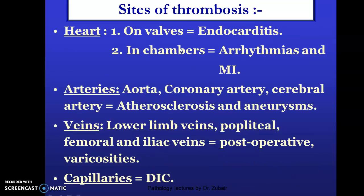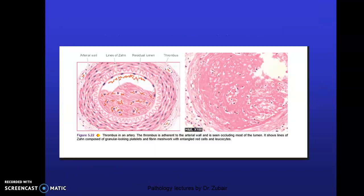What are the sites of thrombus? In the heart, favored sites are the valves in endocarditis, and in the chambers in arrhythmias and myocardial infarction. In the arteries, they are seen in the aorta, coronary arteries, and cerebral arteries, in the form of atherosclerosis and aneurysms. In the veins: lower limb veins — popliteal, femoral, iliac — postoperative varicosities, and in the capillaries in disseminated intravascular coagulation.